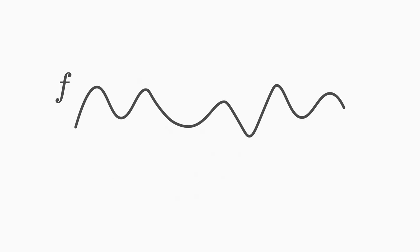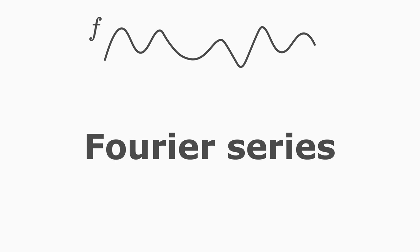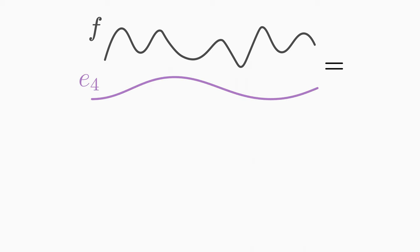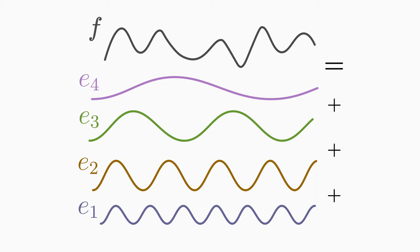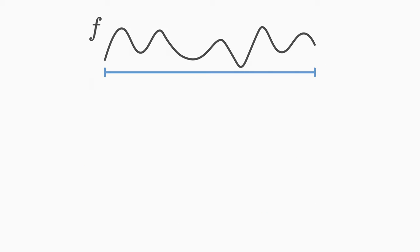But if we care about approximating a function on a whole interval, then we need a Fourier series of the function. The Fourier series is a linear combination of simple periodic basis functions like cosine and sine, or complex exponentials, which in sum can approximate the function f within an interval. In the following, we assume an interval of length L.